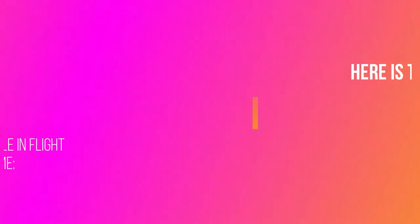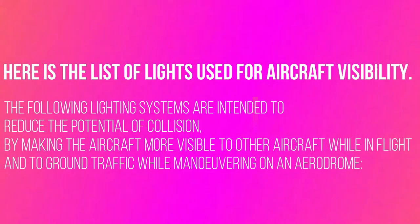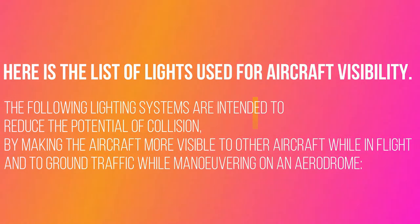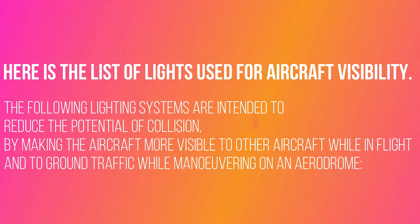Here is the list of lights used for aircraft visibility. The following lighting systems are intended to reduce the potential of collision by making the aircraft more visible to other aircraft while in flight, and to ground traffic while maneuvering on an aerodrome.